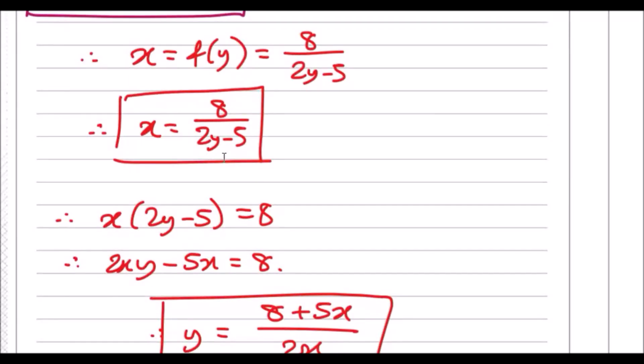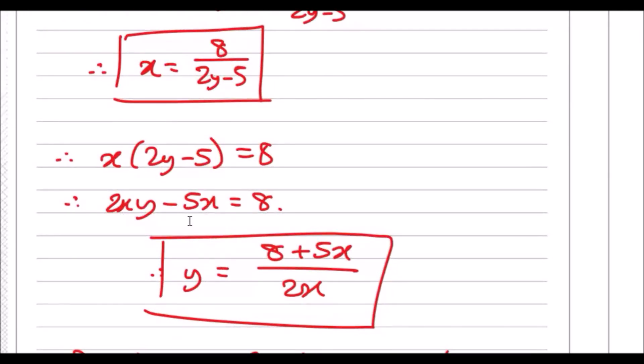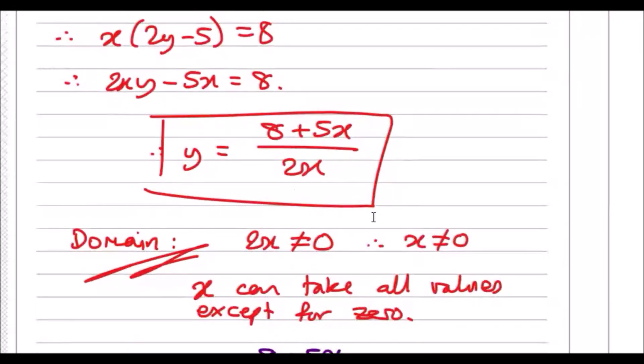So you can kind of see we just literally flip the letters around. And to find the inverse, just make y the subject. So here we can multiply 2y minus 5 across to clear the fraction, expand the bracket on the left side to get 2xy minus 5x, and just rearrange to make y the subject. So what I did is I added 5x across and then divided 2x to get something like this.